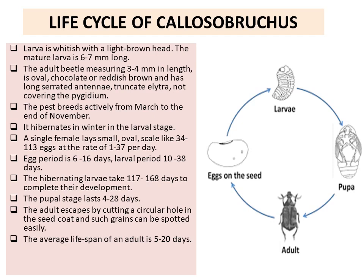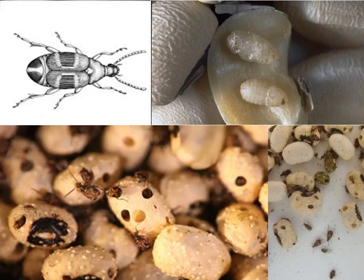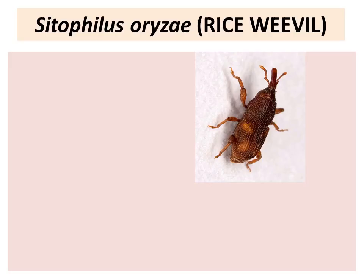It is very important to mention that all 4 instars of the larvae feed on the grains. The 3rd and 4th instar larvae are voracious feeders — they consume a huge amount of food and increase enormously in size. The pupa is an inactive stage. The insect passes through 7–8 overlapping generations in one year. Here you can see the structure of Callosobruchus maculatus, the infected pulses with holes formed, and the grubs along with one pupa.